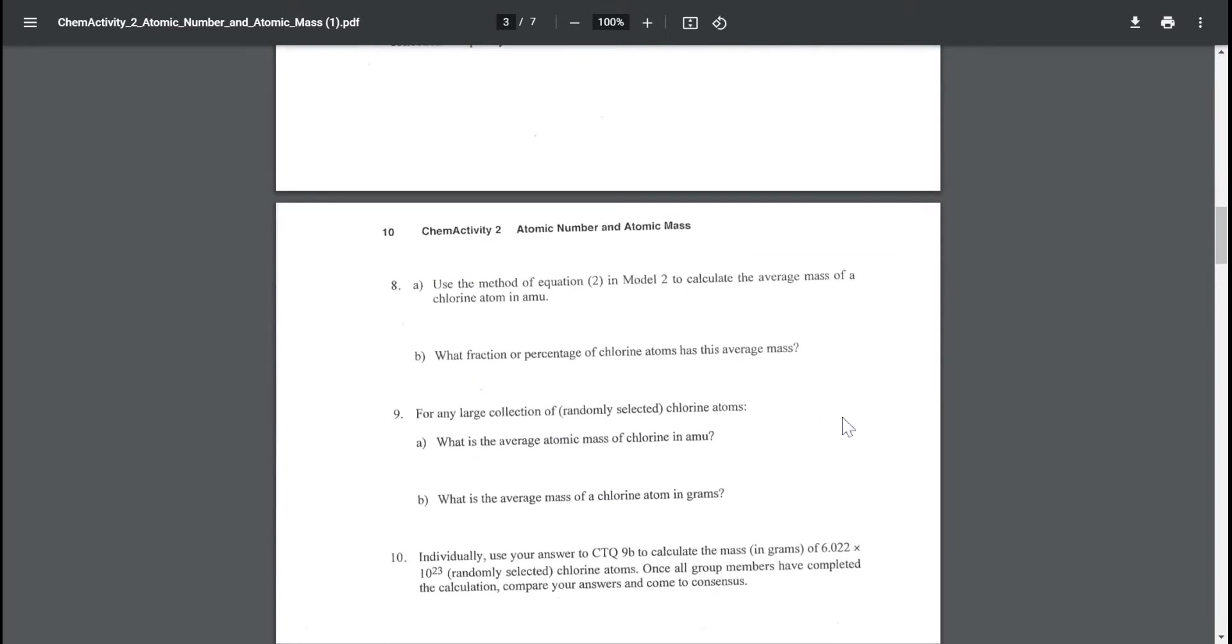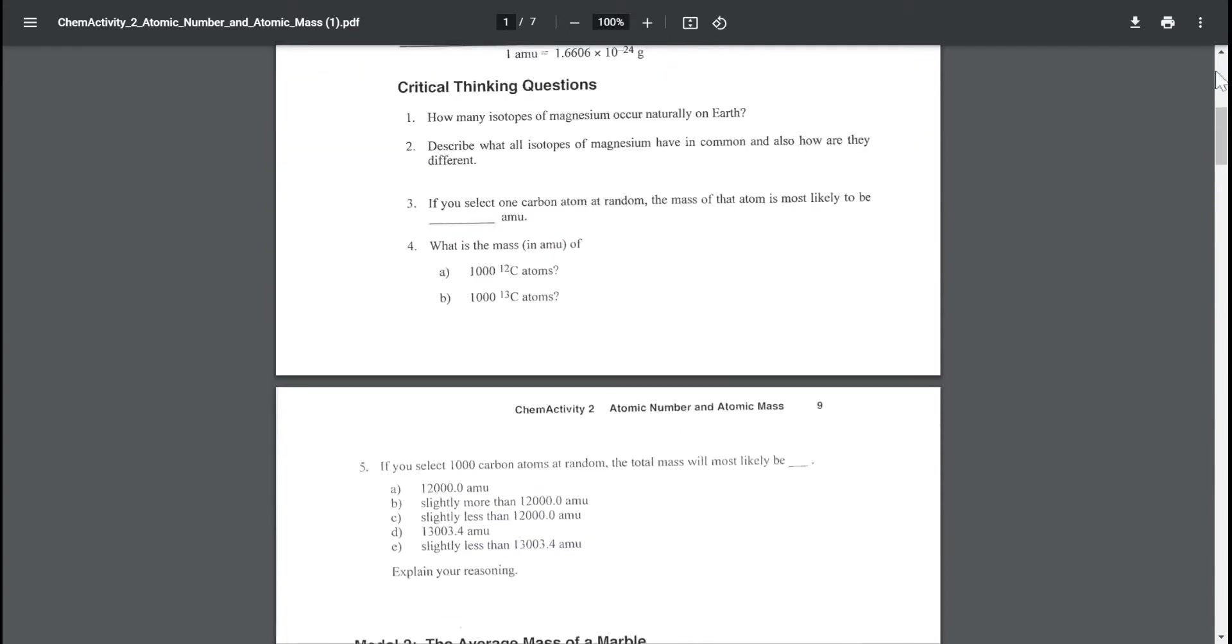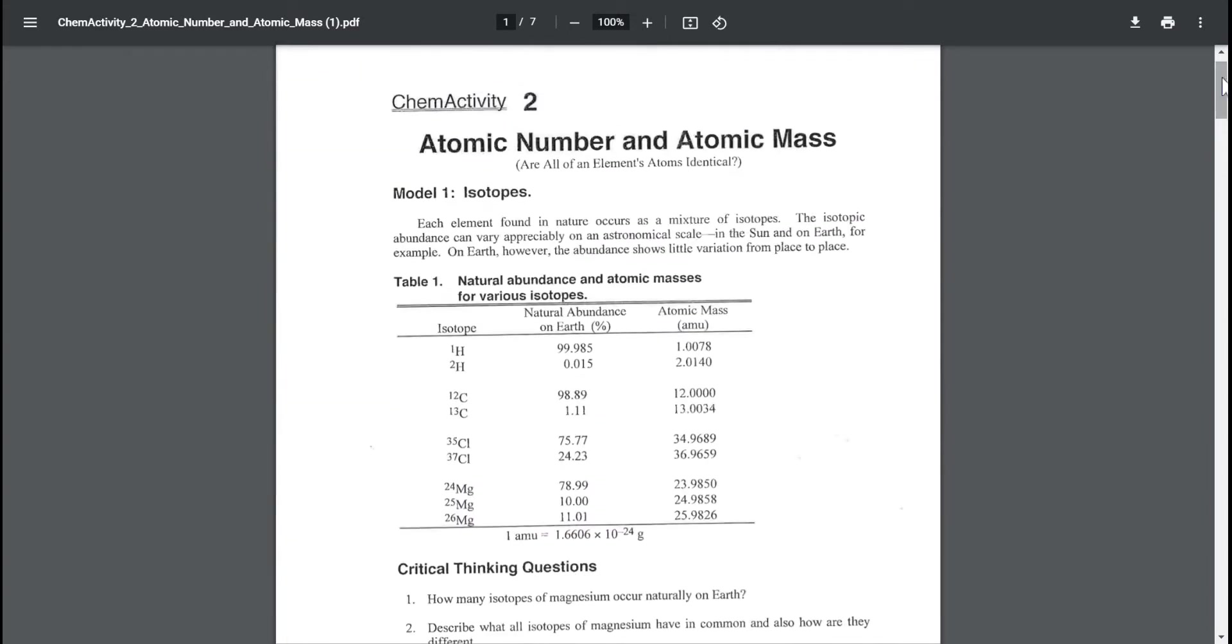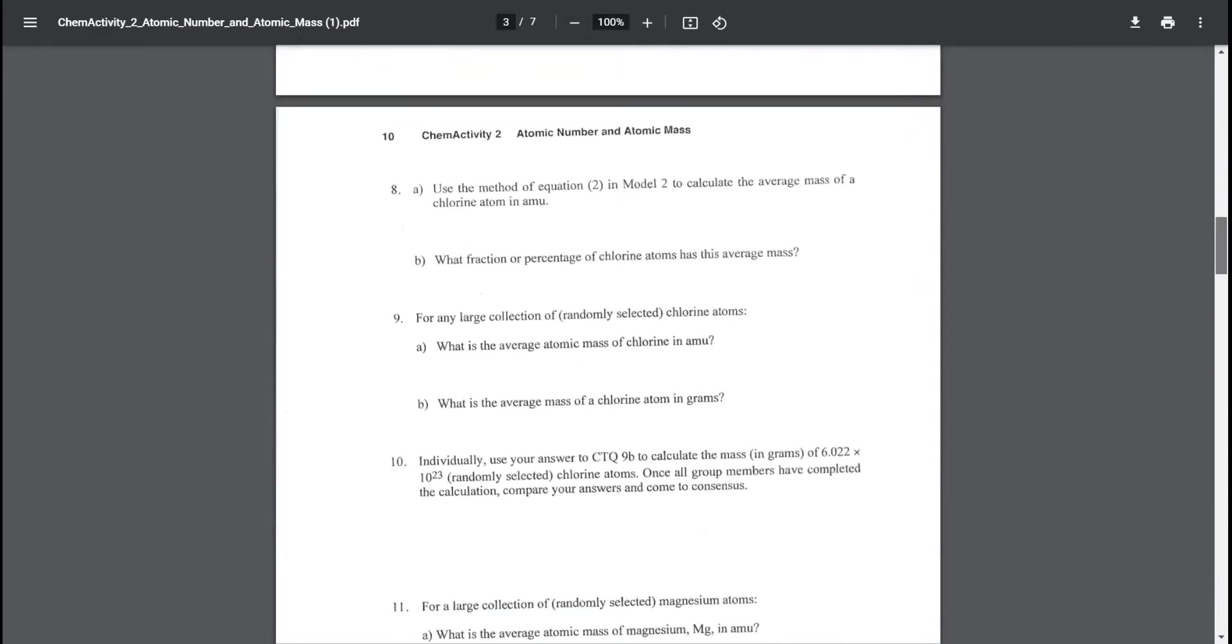So you can use these methods to figure out the average mass of a chlorine atom. You can scroll up here and find chlorine right here. We have two different isotopes, chlorine-35 and chlorine-37. Just use the same models as always.